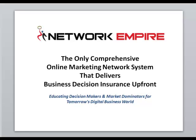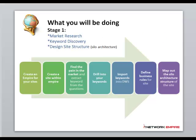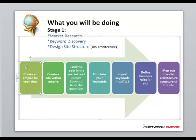The system is broken down into three core stages. The first stage we're going to look at is Market Research, Keyword Discovery, and Site Structure and Design. What you're going to do in DWS is basically the following steps: you're going to create an empire for your site. The reason why we call it an empire is because you can have multiple sites or projects within an empire. Once you've created your empire, you'll then create a site within the empire, which will be your primary money site or a campaign for a single keyword that you're targeting.